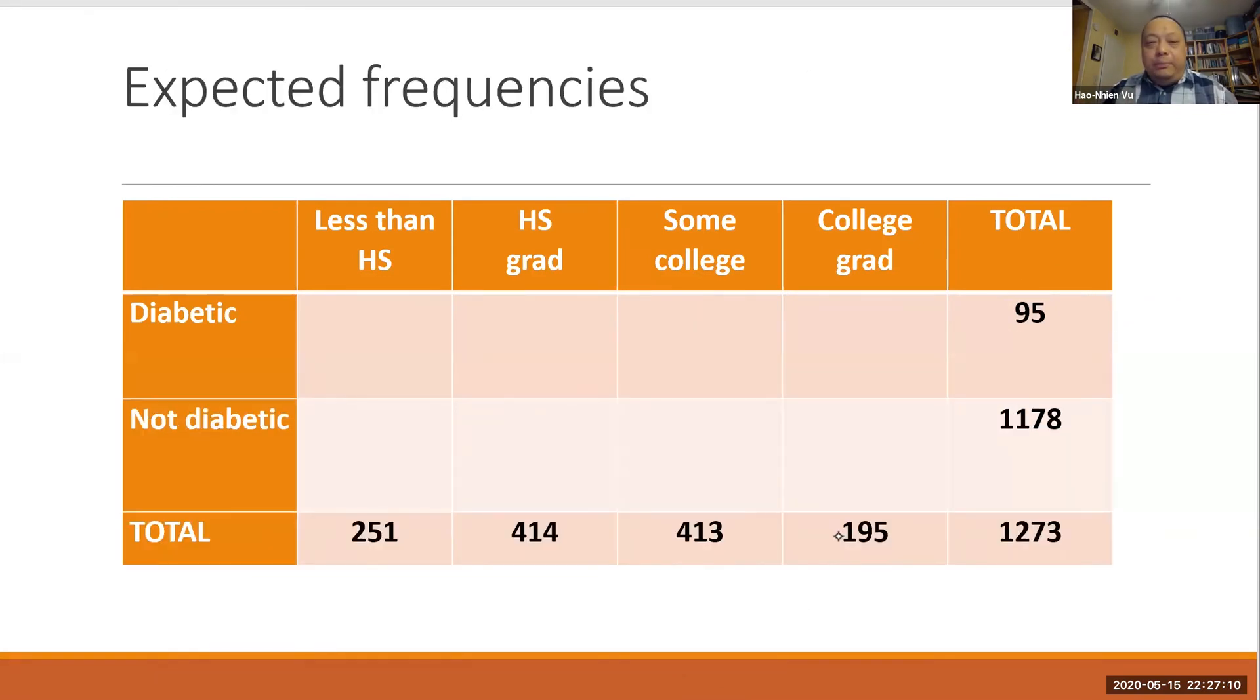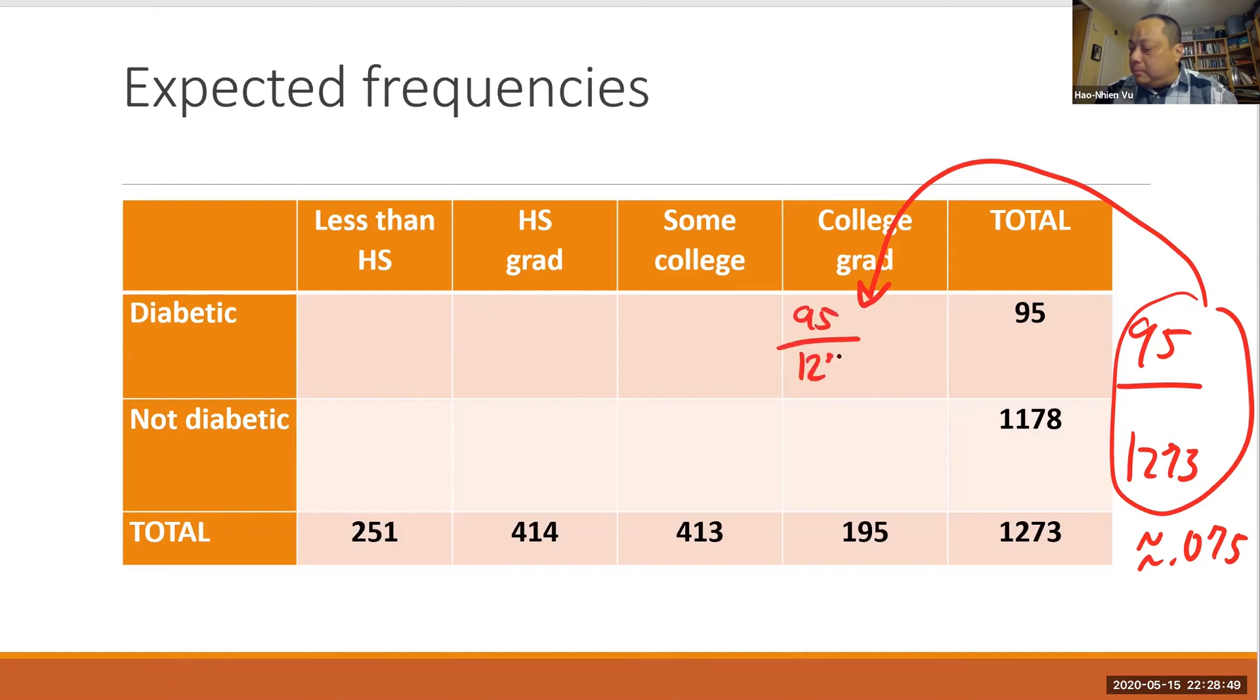So let's clear the board and keep just the total and compute the proportions. The overall proportion of diabetic is 95 out of 1273, and that is about 0.075. Well, if all educational levels had the same, then that means we should be able to apply this proportion to each educational level. So if I were to apply this proportion to the group of college graduates, the frequency of college grads with diabetes should be 95 over 1273 applied to 195, meaning multiplied by 195. And since 195 is 195 over 1, I can write this fraction as 95 times 195 over 1273.